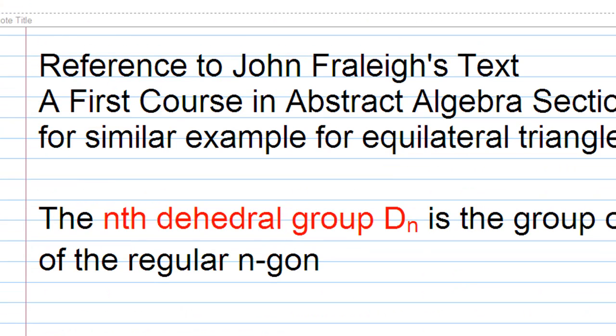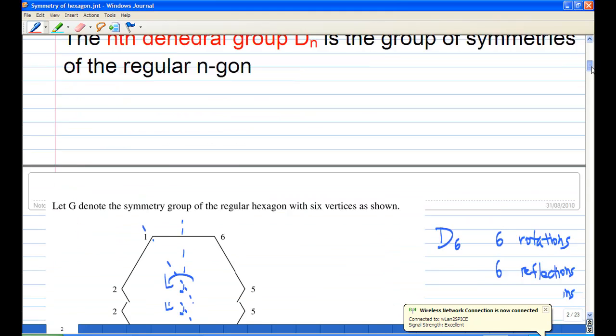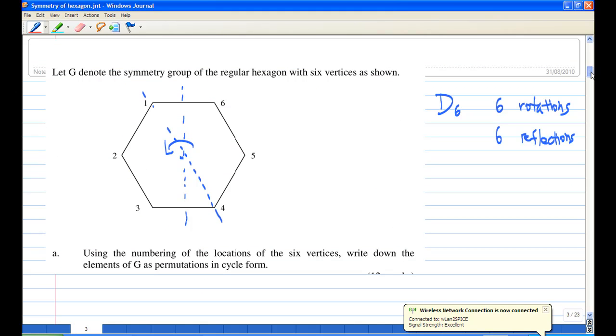Now the reference to this is John Fraleigh's text, A First Course in Abstract Algebra, section 8, page 79 to 80. There are similar examples for equilateral triangle and square. In particular, the dihedral group D_n is the group of symmetry of a regular n-gon. In this case, since we have a hexagon, the group G is actually D₆.